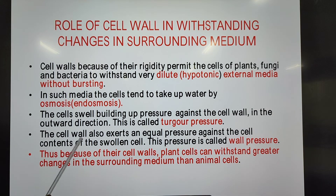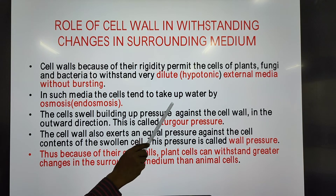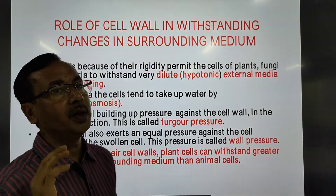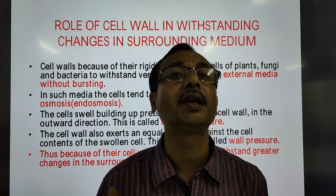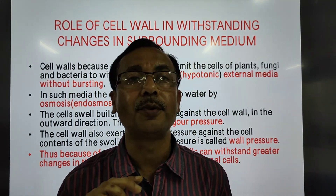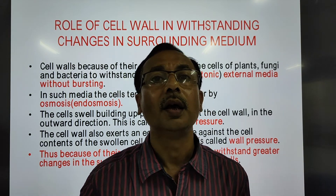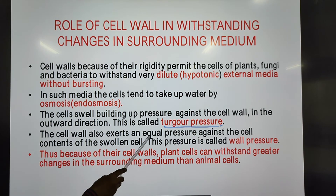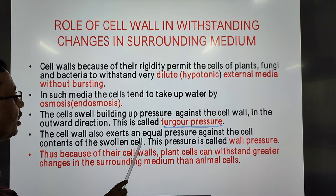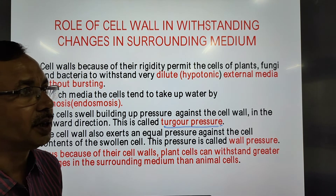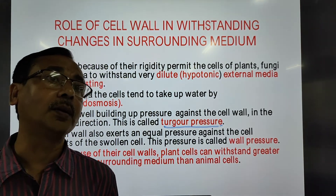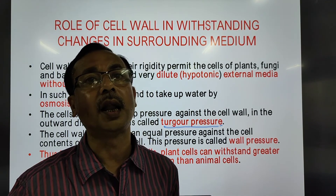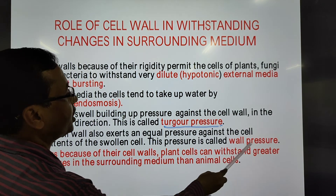When the cells swell, they build up pressure against the cell wall in the outward direction. This is called turgor pressure — the protoplasmic contents exert an outward pressure on the cell wall. At the same time, the cell wall exerts an equal and opposite pressure on the contents of the cell, which is called wall pressure.